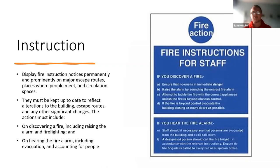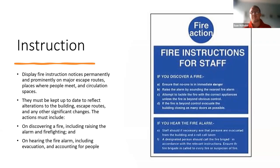Make sure escape routes and instructions are kept up to date — if escape routes change, ensure staff are aware. The correct procedures must be in place: how to report a fire, how to raise the alarm, firefighting if needed, evacuation, and accounting for people within the building. Fire registers and staff entrance logs are vital.